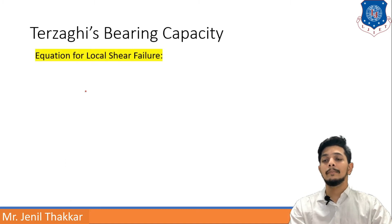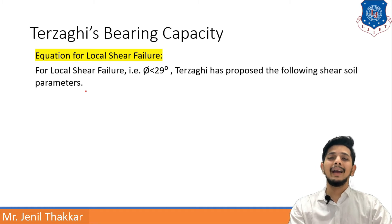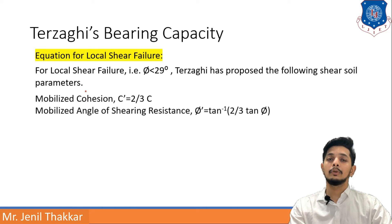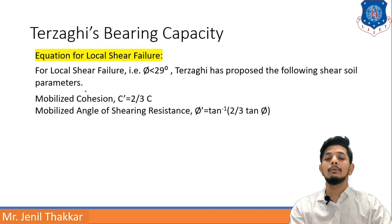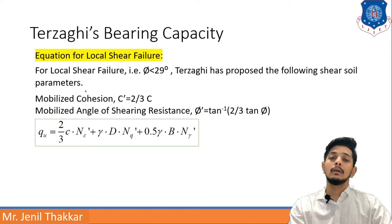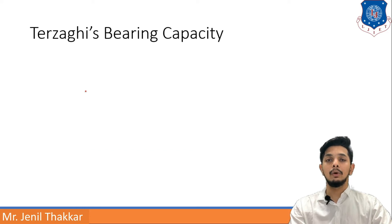For local shear failure, when φ is less than 29°, Terzaghi proposed a modified formula. Here, c becomes c' = (2/3)c, and φ becomes φ' = tan⁻¹(2/3·tan φ). The modified bearing capacity equation becomes: Q_u = (2/3)c·N_C' + γ·D·N_Q' + 0.5·γ·B·N_γ'. So the formula is somewhat modified due to local shear failure.